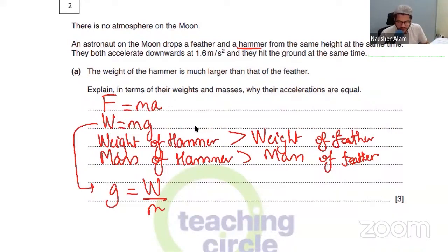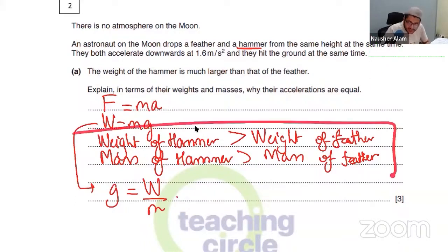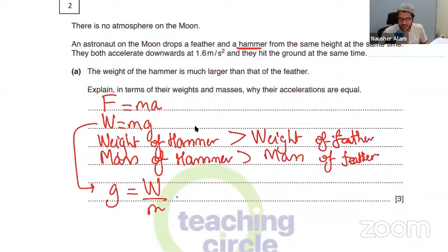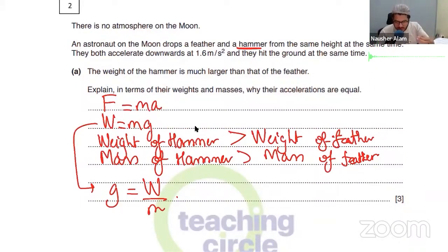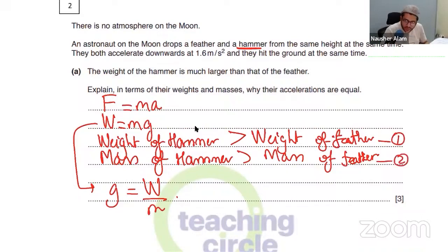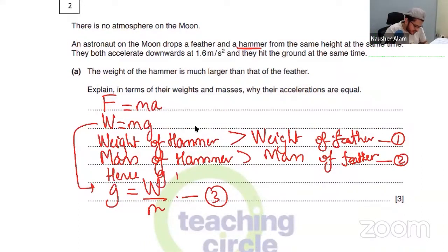You can literally just write it like this: weight of the hammer is more because mass of the hammer is more, hence G remains constant. Weight of the feather is less, mass of the feather is less, hence G remains constant. They both accelerate at 1.6 metres per second squared. G is the same for both.